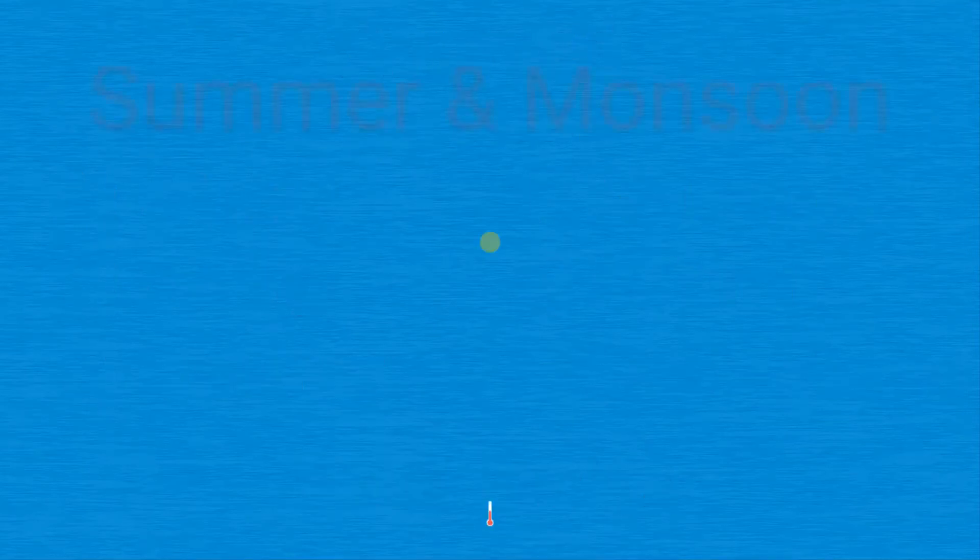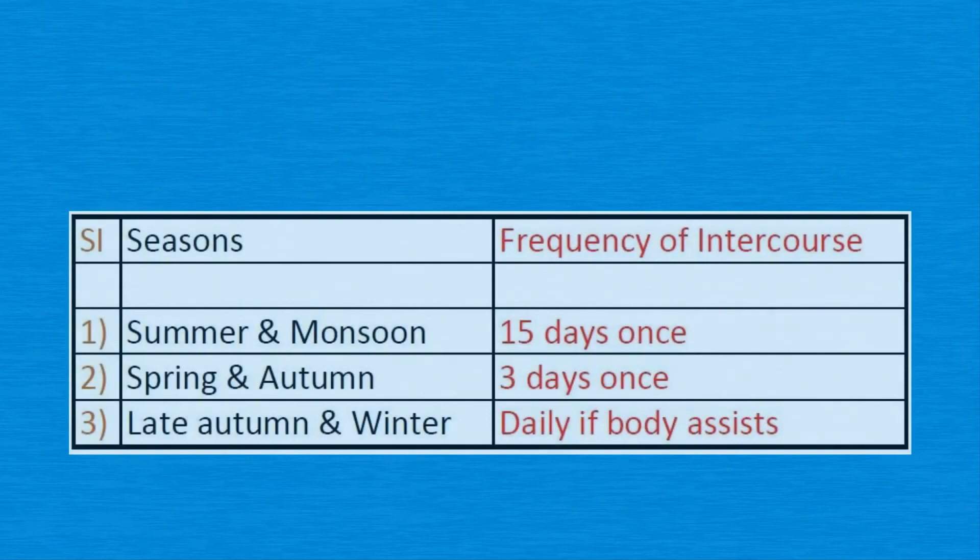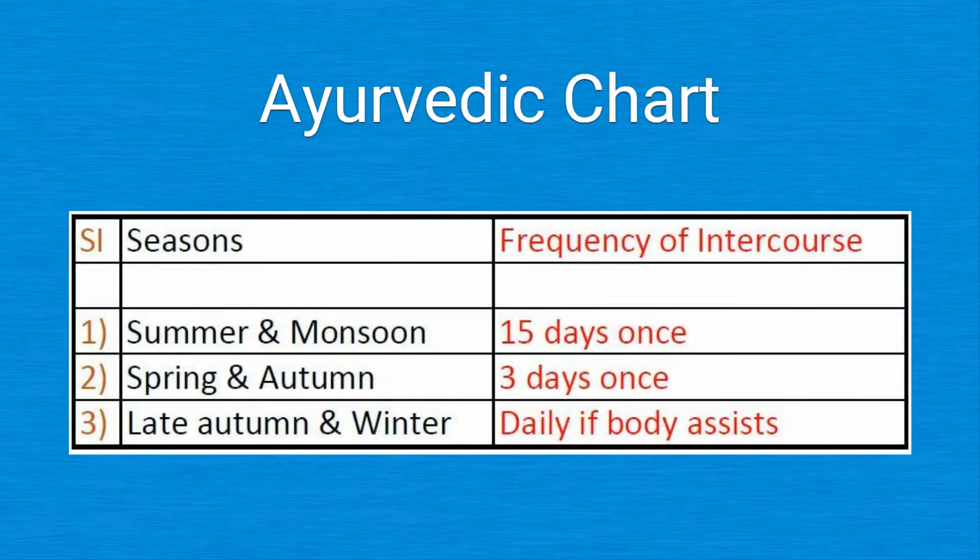Ayurveda prescribes the frequency of intercourse as per the chart below. In summer and monsoon, once in 15 days. Spring and autumn, once in three days. In winter and late autumn, can be had daily.